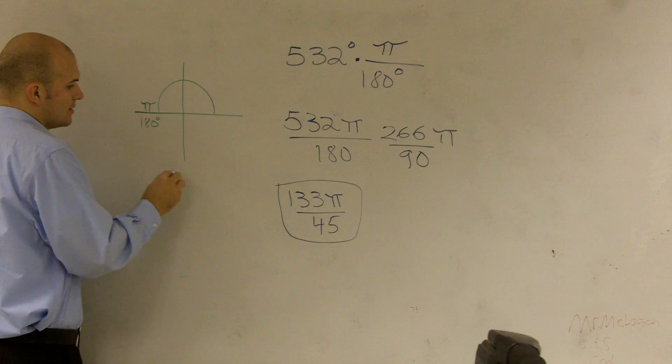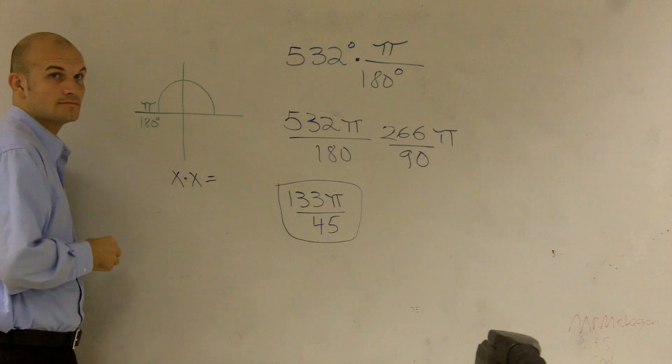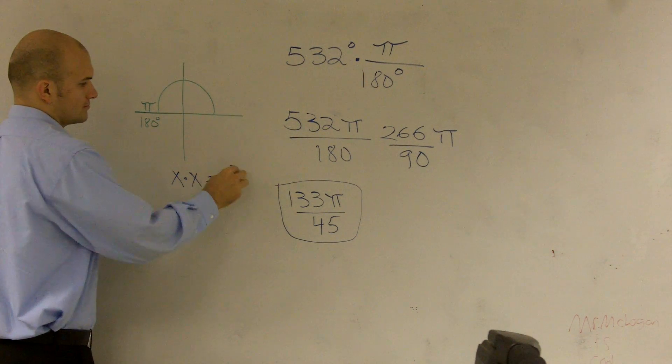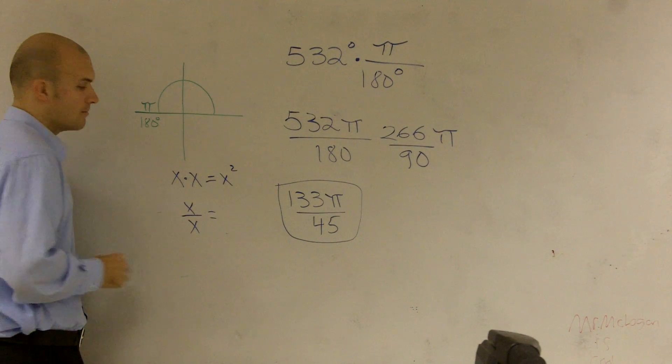If you have, if I did x times x, that gives me what? 2x. Squared. x squared, right? Yeah. x divided by x gives me what? 1. 1, right?